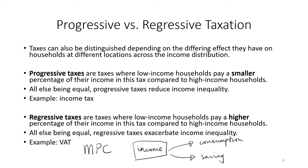Low income households may have to spend a larger percentage of their incomes to sustain a sufficient quality of life. High income households, however, do have the ability to save more because they don't have to spend a high percentage of their income to sustain a high standard of living. Since VAT is a tax on consumption and low income households spend a higher percentage of their income on consumption, low income households spend a larger percentage of their income on VAT. This means they are disproportionately impacted by VAT, which is what makes VAT a regressive tax.